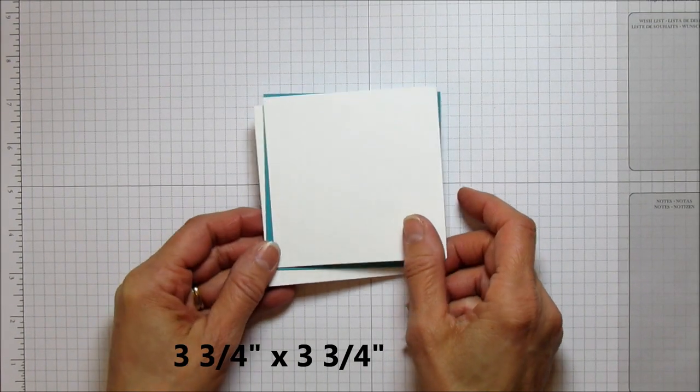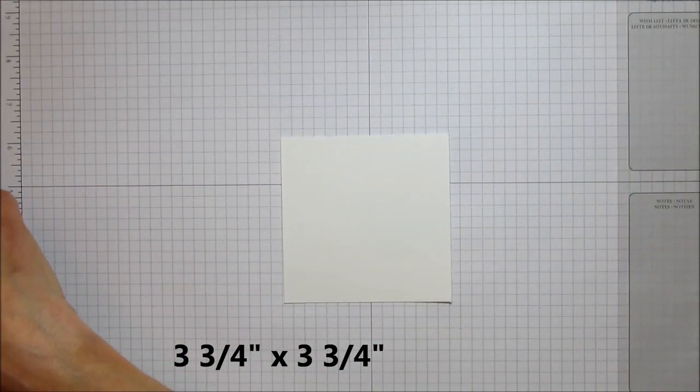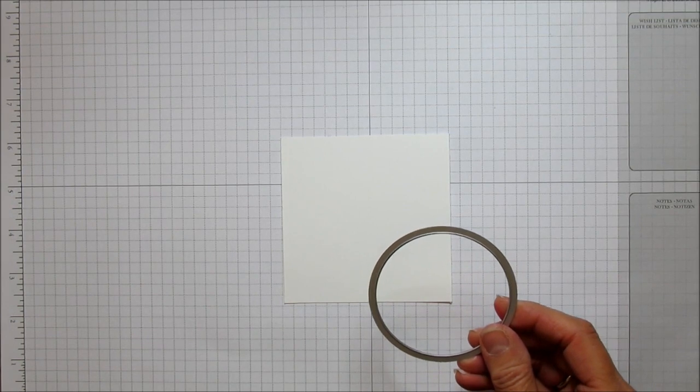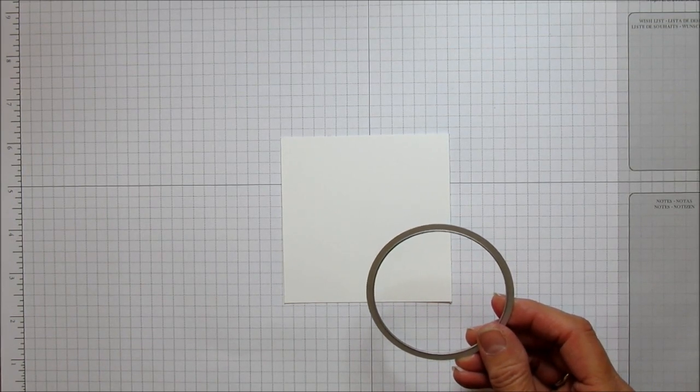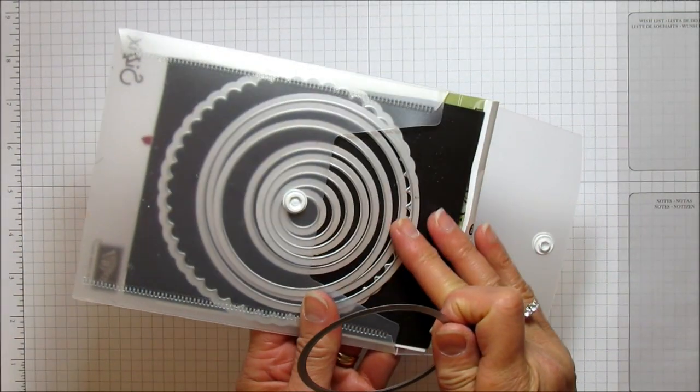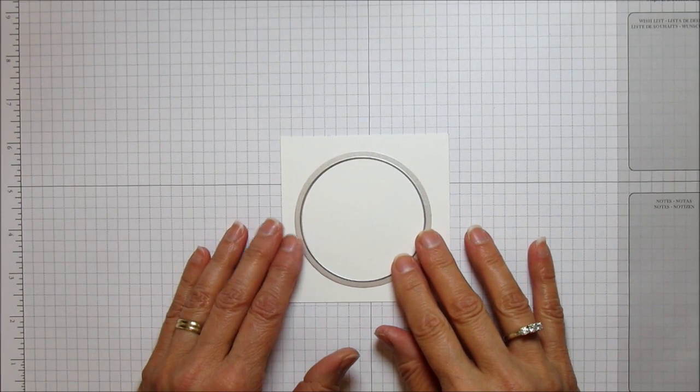The first thing we're going to do is I'm using the circle framelits, and the one that I'm using is—let's see, one, two, three, four, five—this is the sixth one from the center. These are the framelits I'm using.